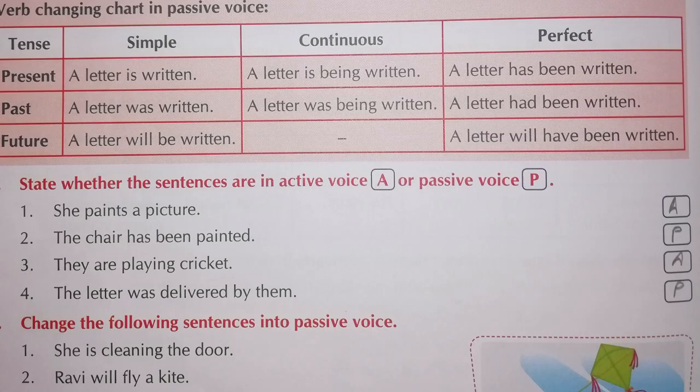'They are playing cricket' — it belongs to the active voice. 'The letter was delivered by them' — it belongs to the passive voice. Because 'by' is being used here. Many times when 'by' appears in a sentence, it means it belongs to the passive voice.